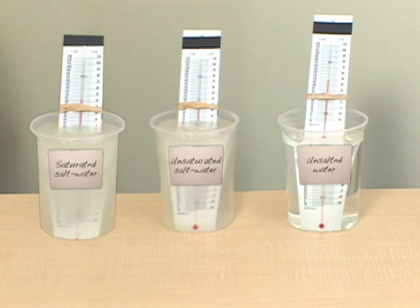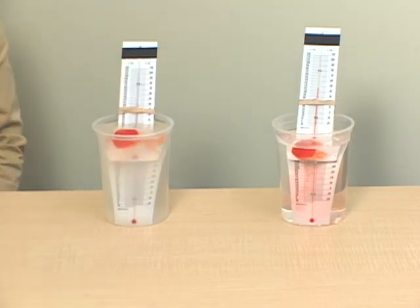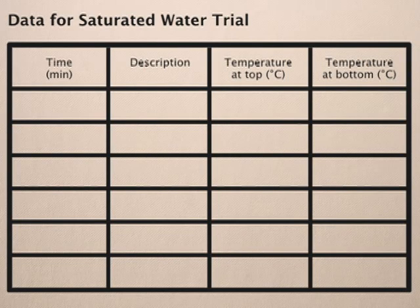After adding the salt, we observed the temperature. Into the solution, we added one colored ice cube and recorded our observations of how the melted water moved through the solution. We also recorded the temperature at the top and bottom of each container.